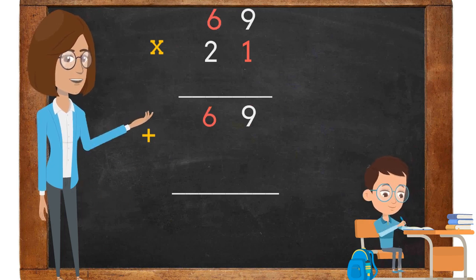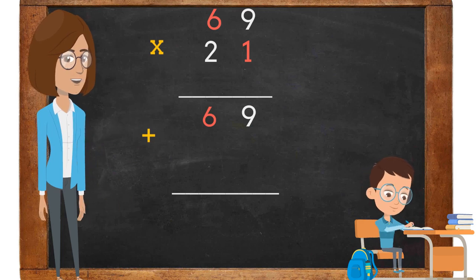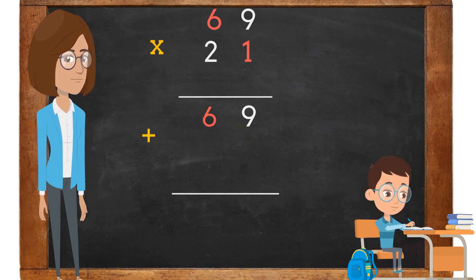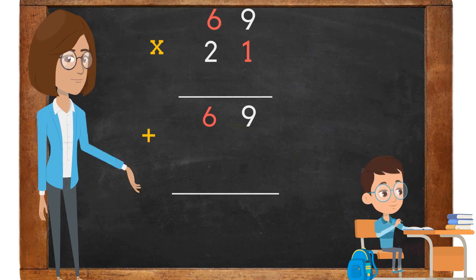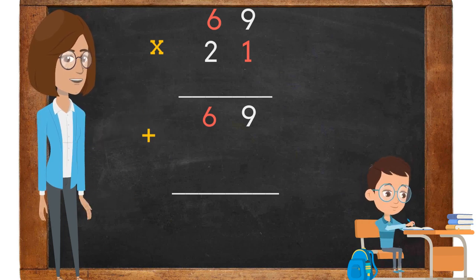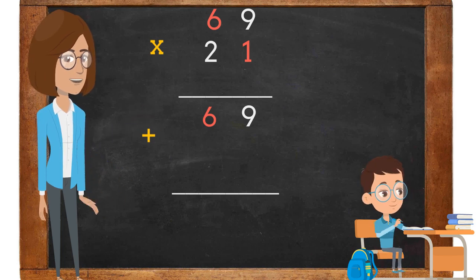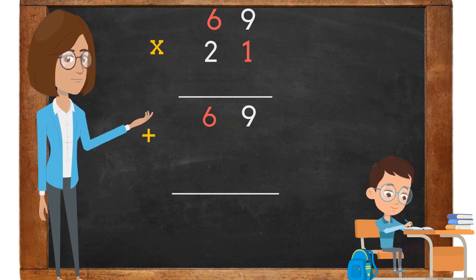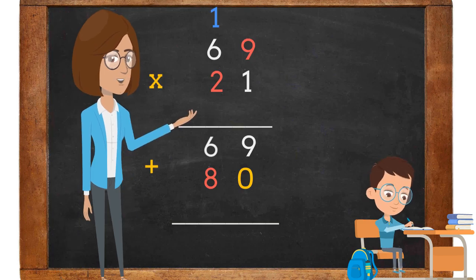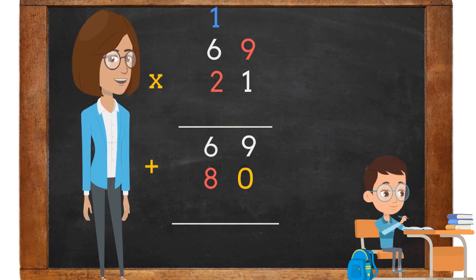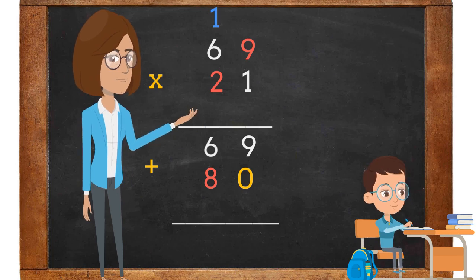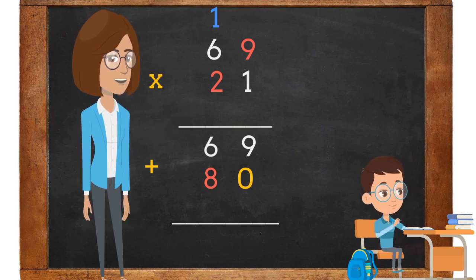The second step is to multiply the 1 at the bottom in the ones place with the 6 at the top in the tens place. 1 times 6 is 6. The third step will be to multiply 2 times 9. 2 times 9 is 18.